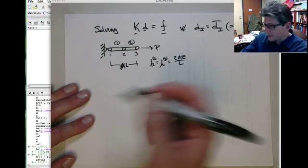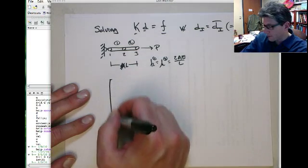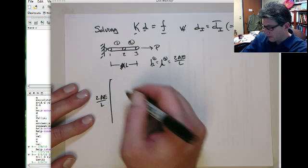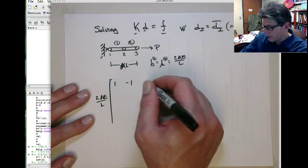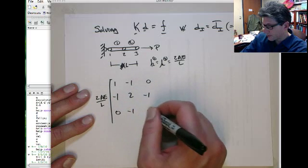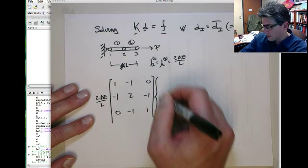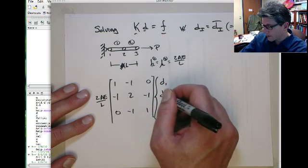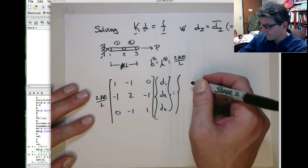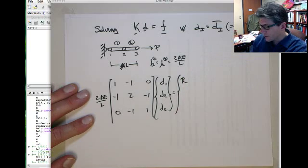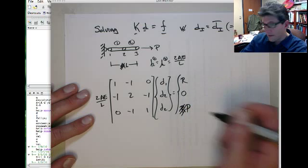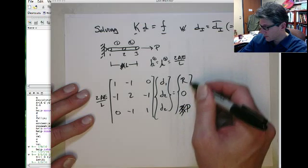So this gives us the following system of equations: 2AE on L times the matrix [1, -1, 0; -1, 2, -1; 0, -1, 1] times [D1; D2; D3] equals the reaction force at node 1 which is unknown, 0, and then P at node 3.